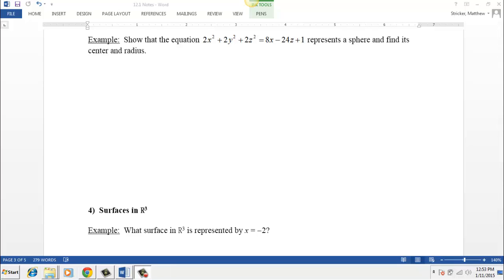Let's take a look at this example from your notes. It says show that the equation 2x squared plus 2y squared plus 2z squared equals 8x minus 24z plus 1 represents a sphere and then find its center and radius.